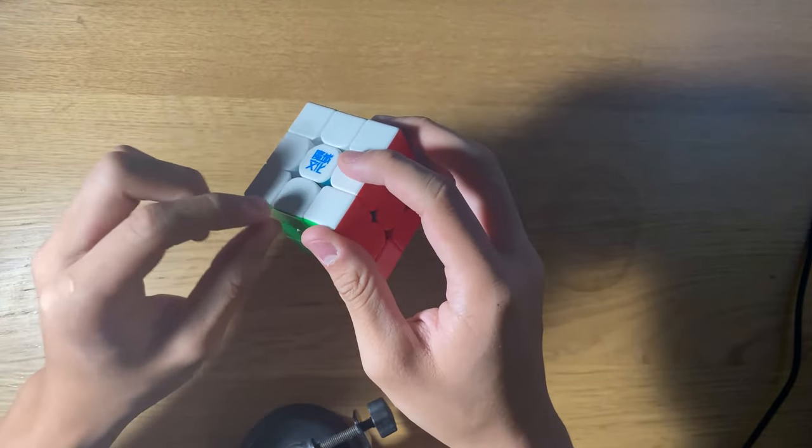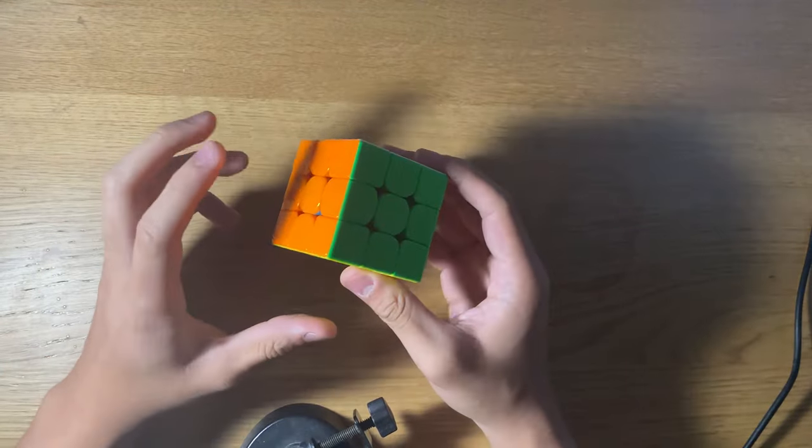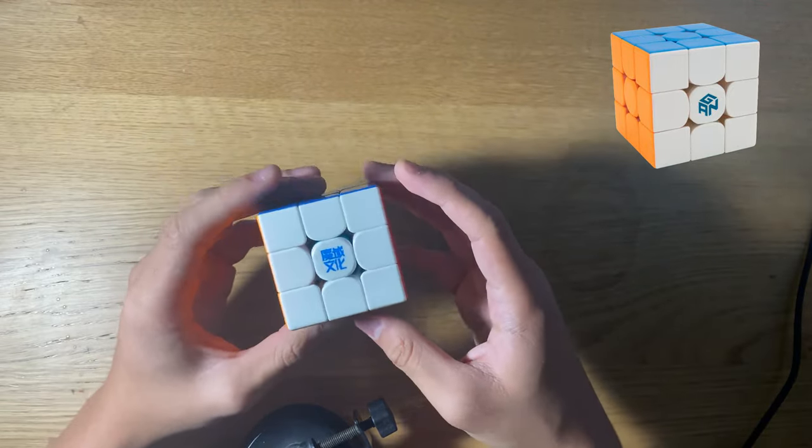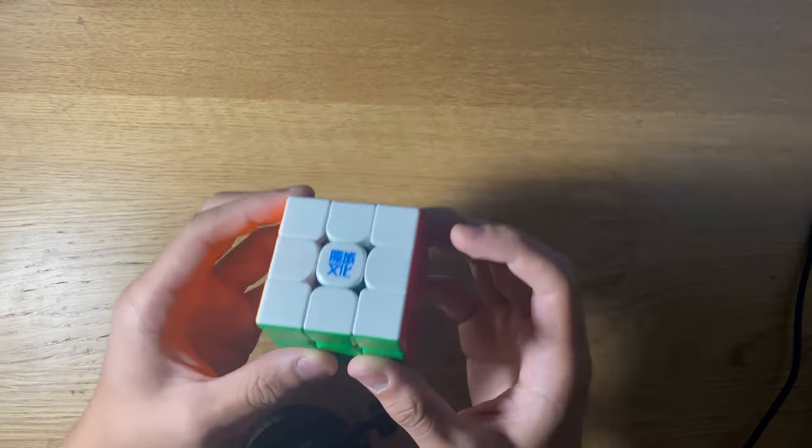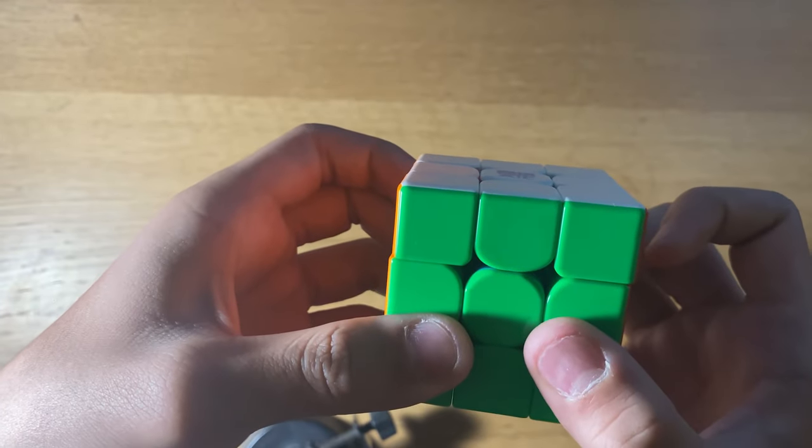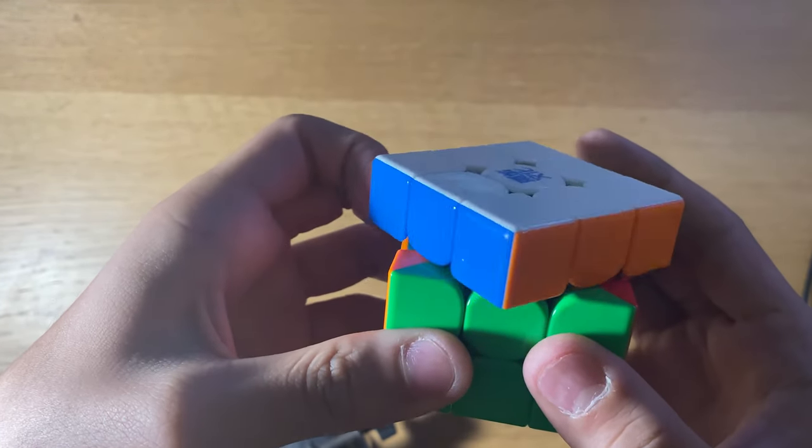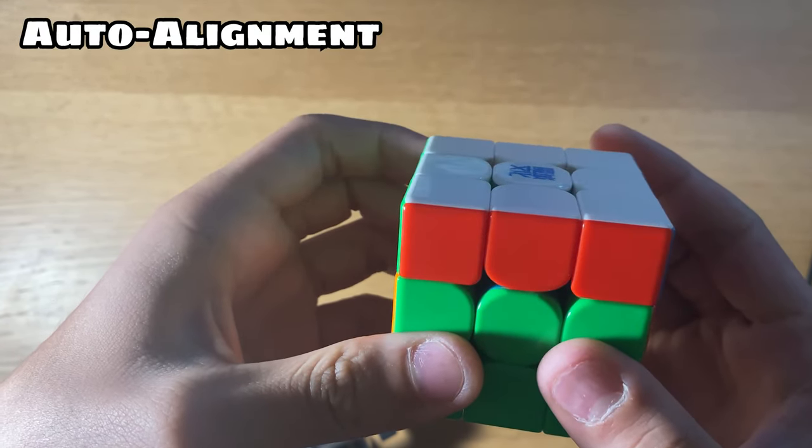It's more similar to a GAN cube than a Moyu cube because in the Worm V9 you can also see that there are like the same mechanism as the GAN 13, as you can tell by the magnets.